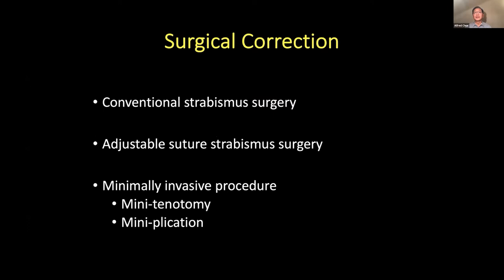Each surgical correction has a 60 to 80 percent chance of success, so repeat surgery is common. In the conventional approach, you can perform recession, resection, or transposition of the muscles. Two more recent approaches are adjustable suture surgery and minimally invasive procedures such as mini-tenotomy or mini-plication.